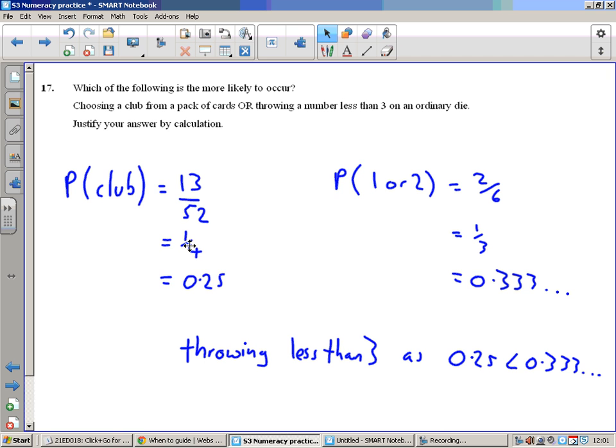Comparing a quarter and a third, well we know a quarter is less than a third already, but it's nice to just compare it by decimals. So 1 divided by 4 is 0.25. 1 divided by 3 is 0.333 recurring. So which is more likely to occur? This one's more likely to occur because the probability is larger. Throwing less than three at 0.25 is less than 0.333.